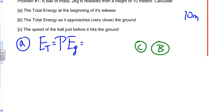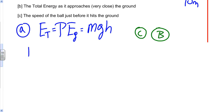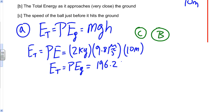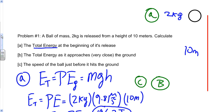From the reference table, the formula for gravitational potential energy is PE = MGH. So the total energy at release equals the gravitational PE: mass of 2 kilograms times gravity 9.81 meters per second squared times height of 10 meters. That gives us a total energy equal to gravitational potential energy of 196.2 joules.